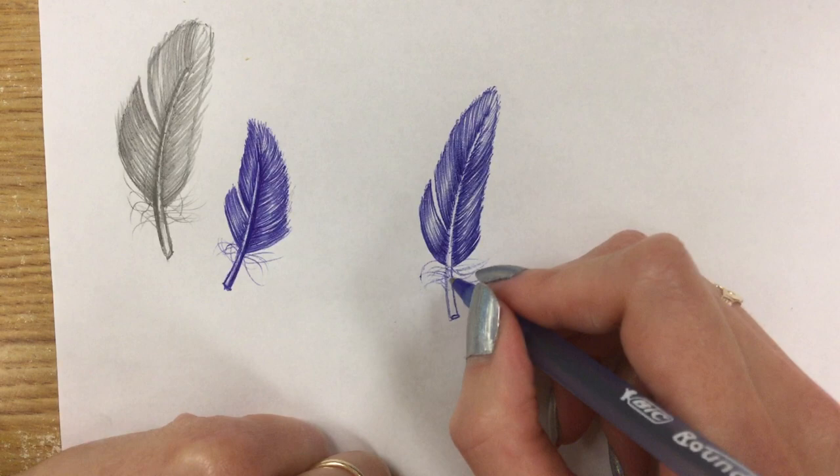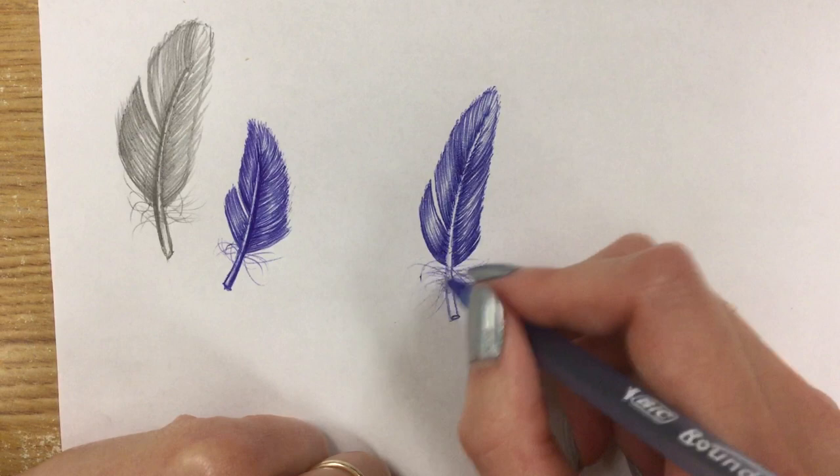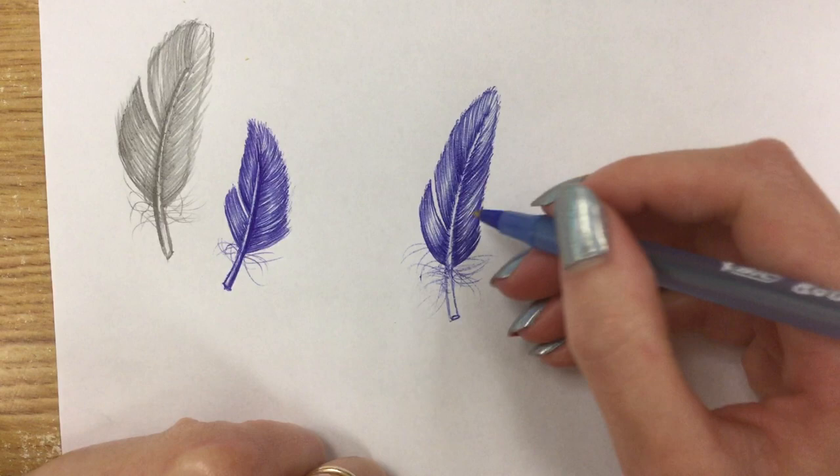So I'm gonna add those. Add a couple going the opposite way. Maybe one is gonna go really down low. They can overlap the feather a little bit too. They often do that in real life. So I'll add those wisps. This one has a lot.